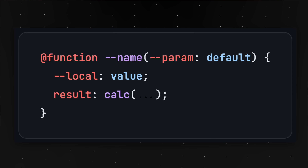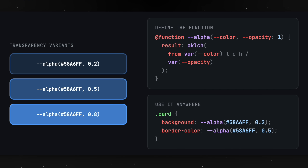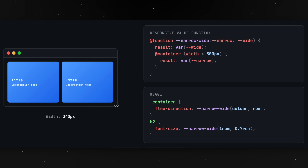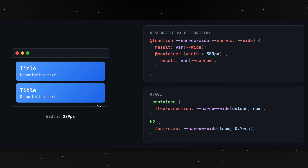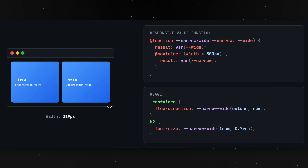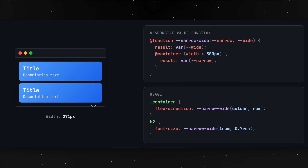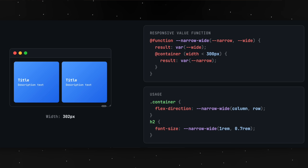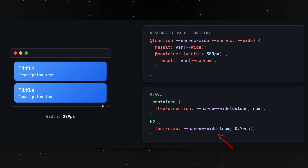Last but not least, feature 10 — perhaps the most powerful in the right person's hands: custom functions in CSS. We give our custom function a name, define its parameters, define local variables inside, run logic, and return a result. For example, a custom function called alpha that takes a color and a transparency value and computes the oklch value — creating clean, reusable syntax. Another example is a custom narrow-wide function: it takes narrow and wide values, and based on a media query — whether the container is less than 300 pixels — returns either the narrow or wide value. This creates really clean code for flex-direction and font-size, keeping logic inline instead of in separate media queries.